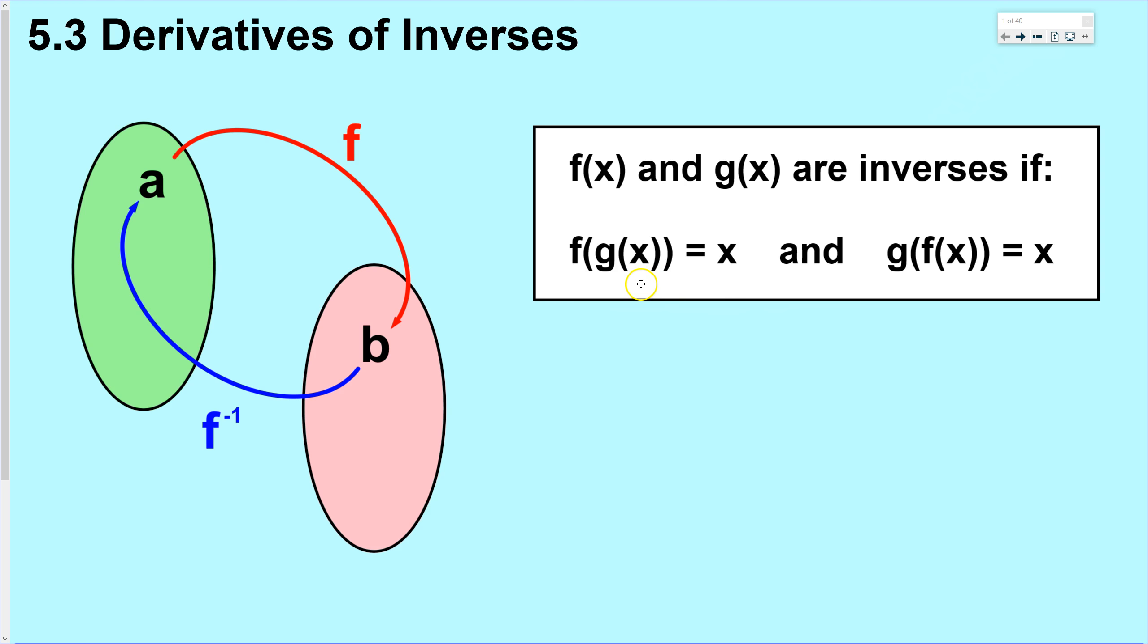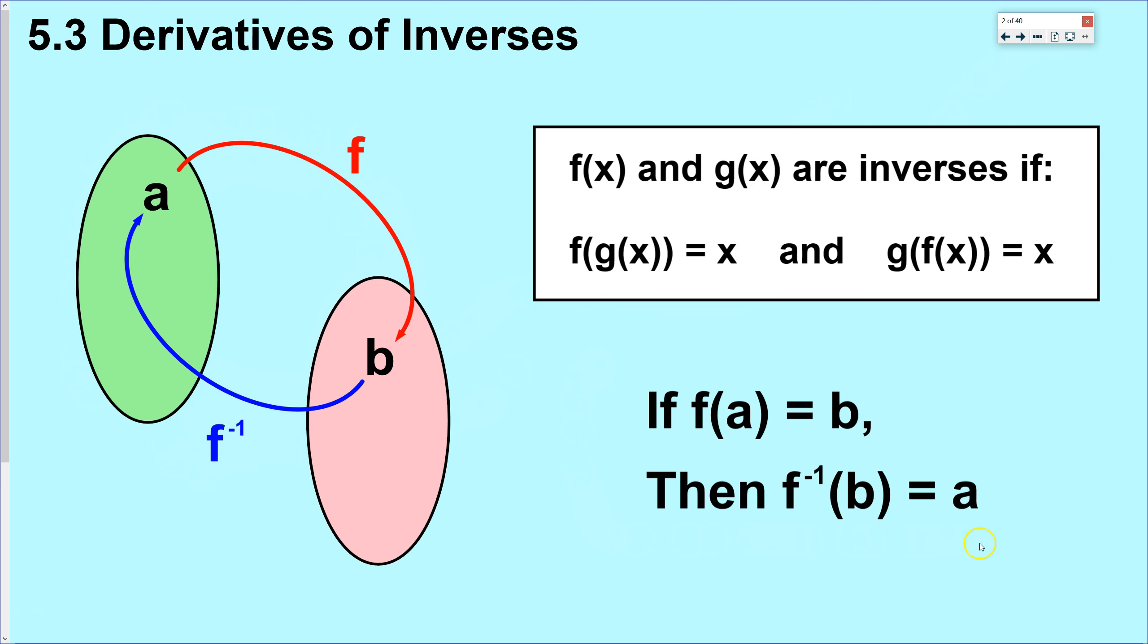A pictorial view of it is you have a set of numbers with an element a in it and f maps a to b and f inverse basically just undoes that work. So it brings the output of f back to the input of what it was originally. So we use this notation to denote an inverse with that little negative one up there pronounced f inverse. And below here on this next slide, you can see another way to basically state the same thing that if f brings a to b, so if f maps a to b, then f inverse maps b back to a. So they undo each other yet again.